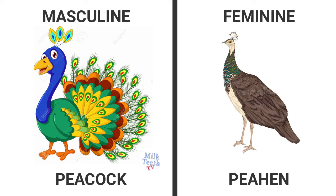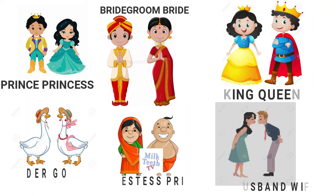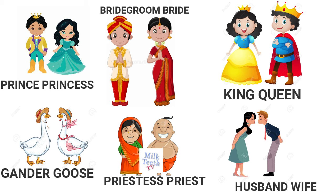Let's revise. Prince — princess. Bridegroom — bride. King — queen. Husband — wife. Priest — priestess. Gander — goose.